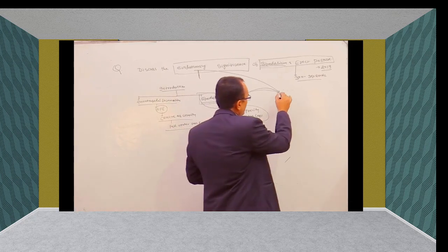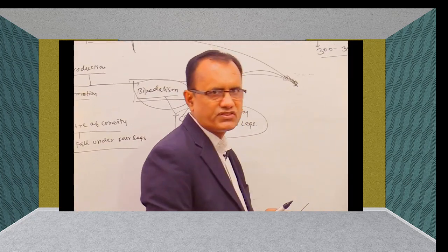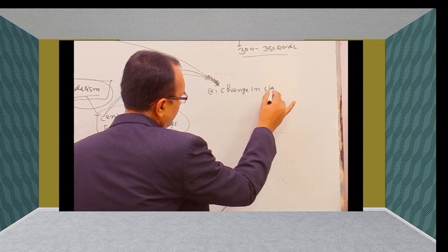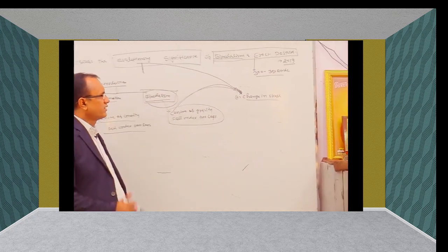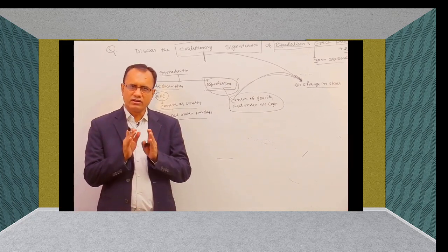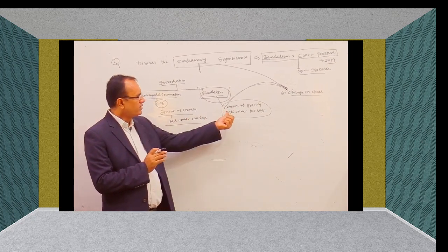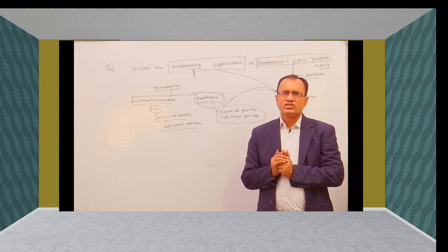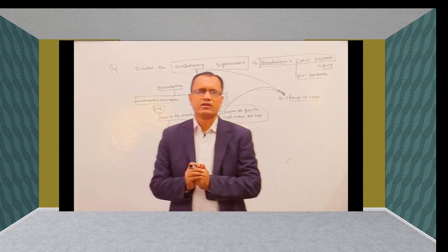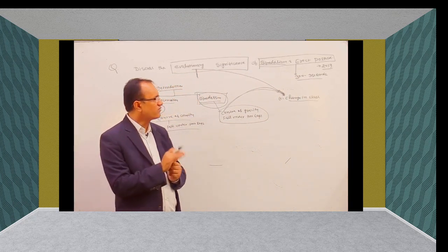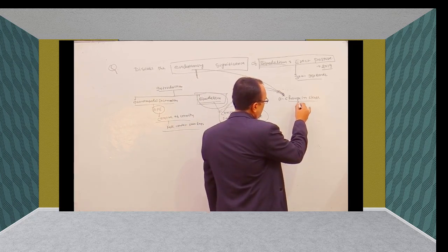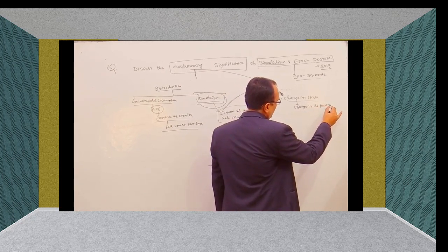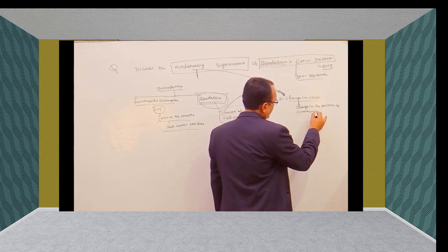Then in the structure of your answer, you have to write about their evolutionary significance. The first important thing is the change in the skull — specifically the change in the position of the foramen magnum. Due to bipedalism, when the centre of gravity falls under two legs, it initiates changes in some important parts of the human body, and the first important change is in the skull: basically, the change in the position of the foramen magnum.